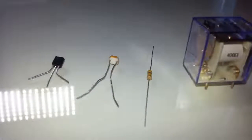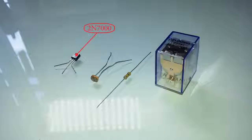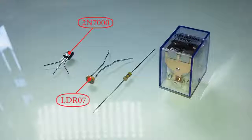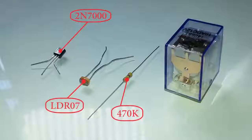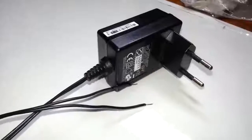For building such device we'll need 1 MOSFET transistor 2N7000, light-dependent resistor LDR07, 470kΩ resistor, 12V relay, and a 12V power source.